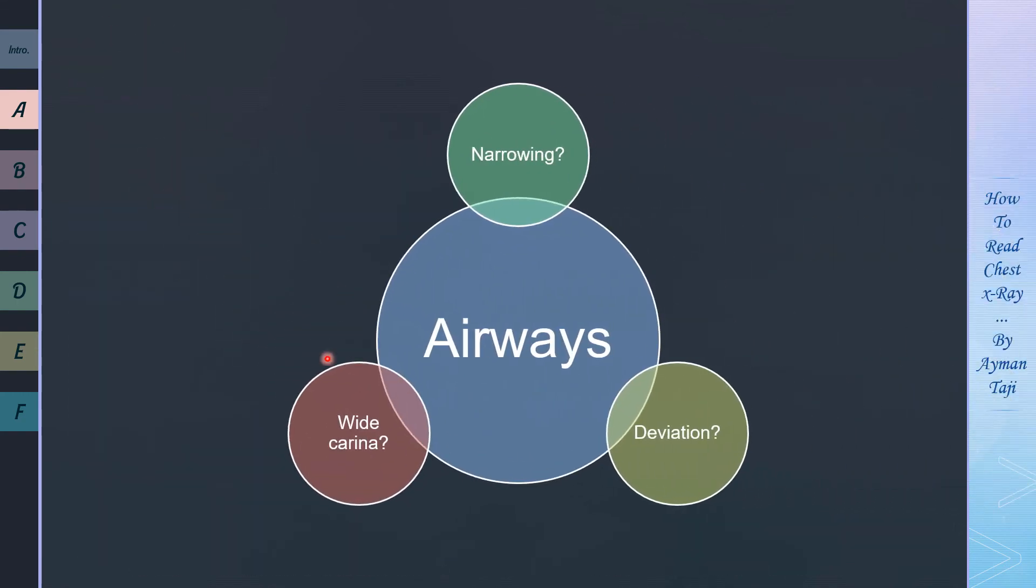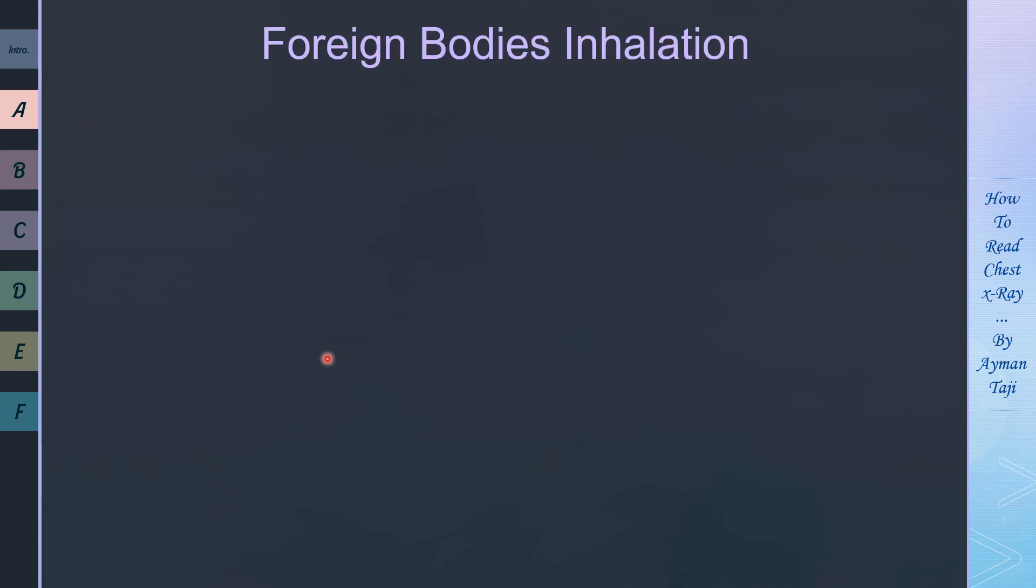So when you check the X-ray, don't forget to ask yourself these three questions in assessing the airways: is there any narrowing? Can you see any deviation? And is the carina wide or not? Finally, I just want to mention a not so common but very important and potentially fatal case, especially in children, which is foreign body aspiration.